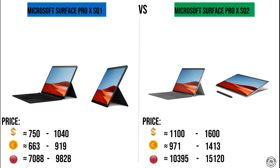Finally, for the prices, the Pro X SQ1 starts from $750 up to $1,040, while the Pro X SQ2 starts from $1,100 up to $1,600. The reasons behind this price range are simply the choice of RAM memory capacity in addition to storage capacity.